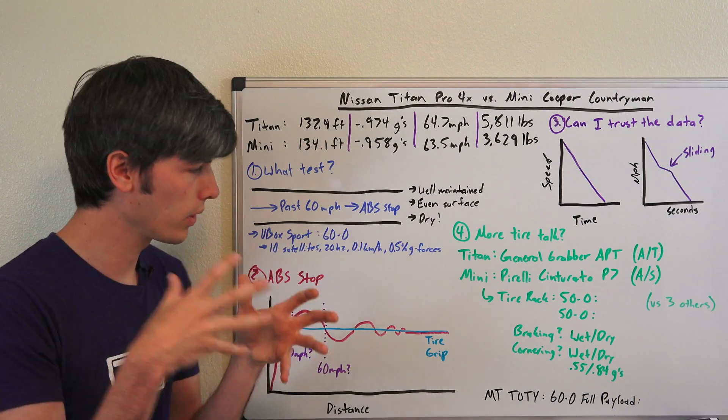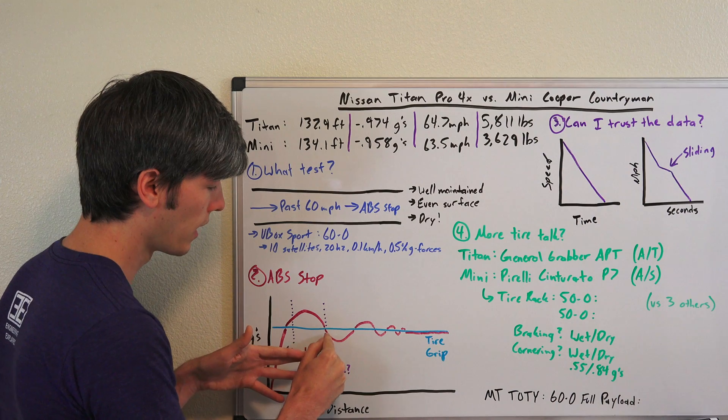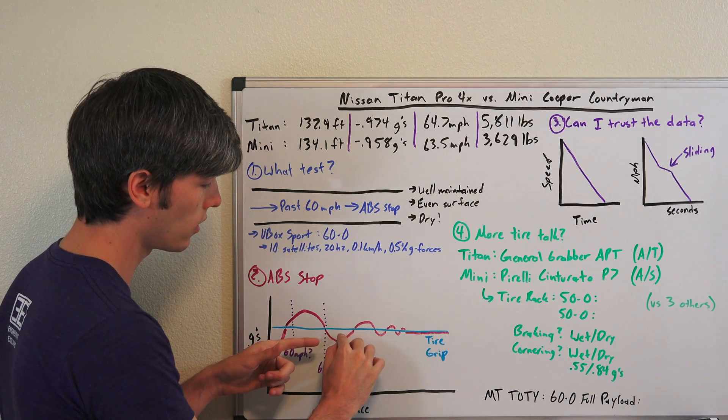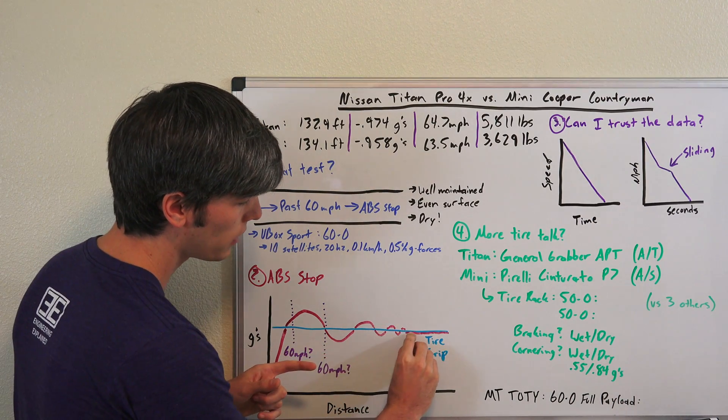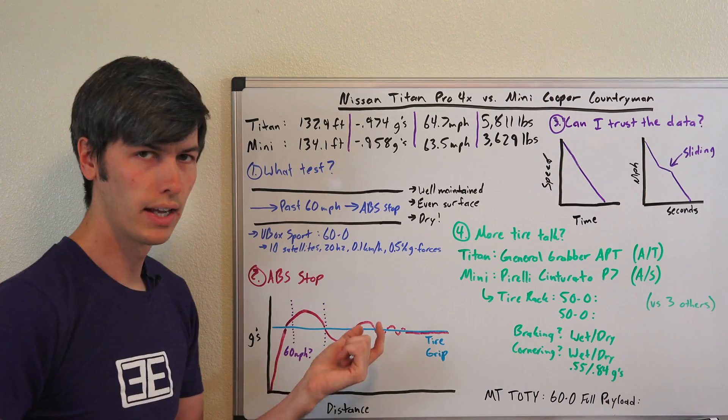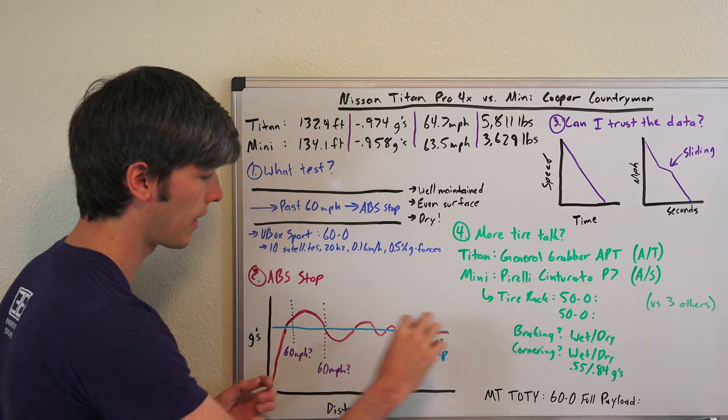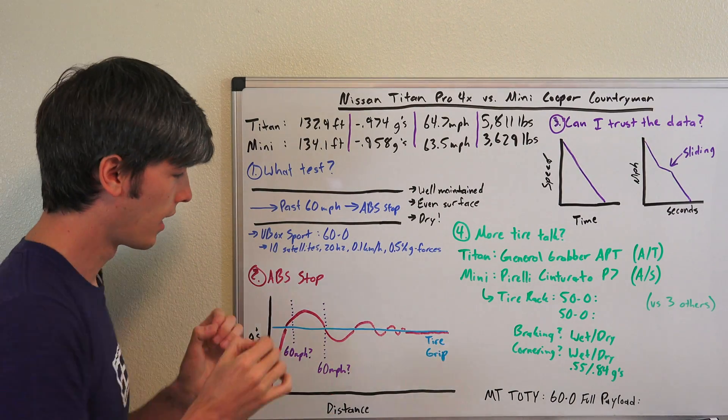Once that wheel's locked up, your ABS kicks in and says whoa, hold on, let off the brake pressure. It recatches that tire and then lets it continue to rotate. The ABS is trying to hunt down that tire grip limit and just float right there at that limit.